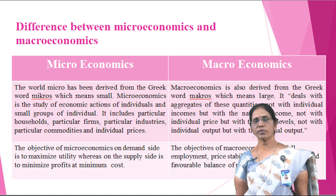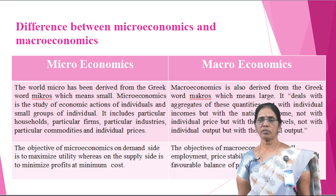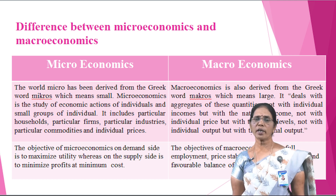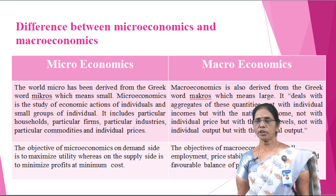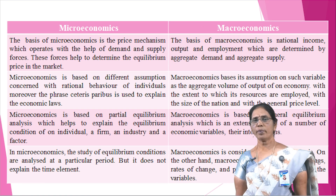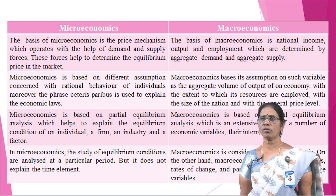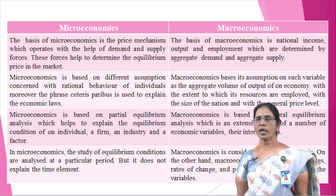The second difference: the objective of microeconomics on the demand side is to maximize utility, whereas on the supply side it is to maximize profits at minimum cost. The objectives of macroeconomics are full employment, price stability, economic growth and a favorable balance of payments. The third difference: the basis of microeconomics is the price mechanism, which operates through demand and supply forces that determine equilibrium price in the market. The basis of macroeconomics is national income, output and employment, which are determined by aggregate demand and aggregate supply.